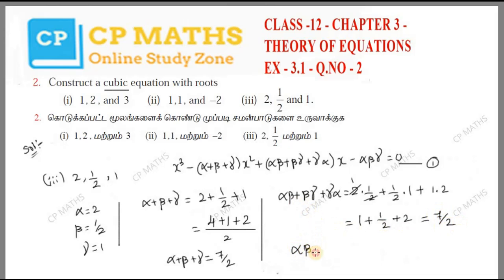Alpha beta gamma: 2 into 1/2 into 1. Cancelling, the answer is 1.